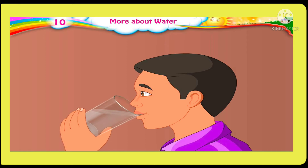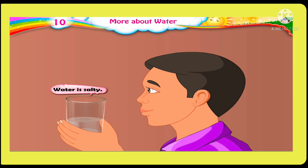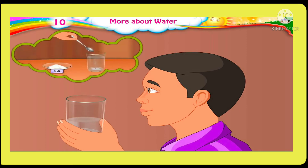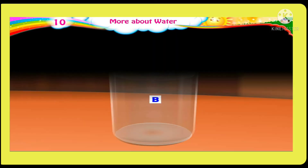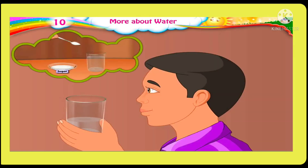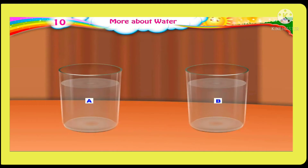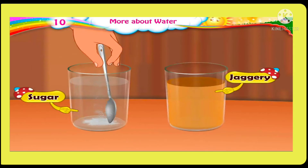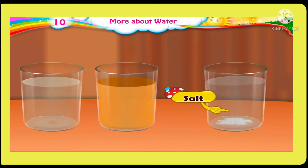Taste a sip of water from glass A. The water is salty, which means salt has dissolved in glass A. Now taste a sip of water from glass B. The water tastes sweet, which means sugar has dissolved in glass B. Water takes the taste of the substance dissolved in it. When sugar and jaggery are dissolved in water, it tastes sweet, and when salt is dissolved in water, it tastes salty.